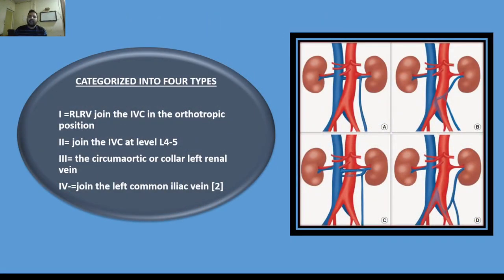Retroaortic left renal vein can be categorized into four types. Type 1 joins the inferior vena cava in the orthotopic position, as in diagram A. Type 2 joins the inferior vena cava at the lower level of L4-L5 vertebra, as in diagram B. Type 3 is the circumaortic or collar left renal vein, as in diagram C. Type 4 joins the left common iliac vein, as in diagram D.